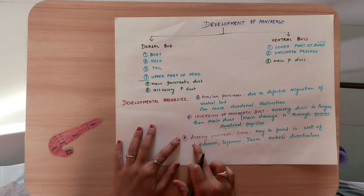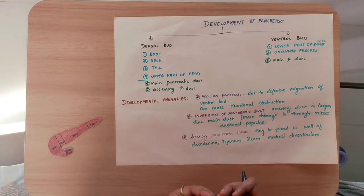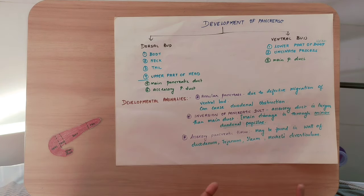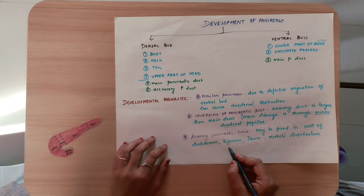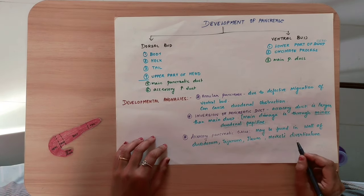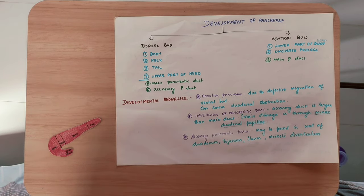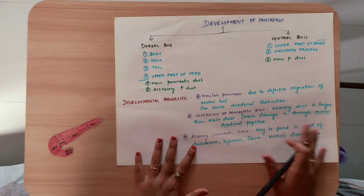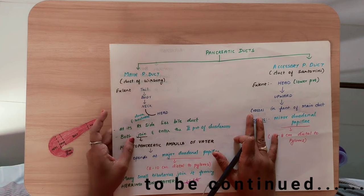The third condition is accessory pancreatic tissue — pancreatic tissue can develop in various other organs. It may be found in the wall of the duodenum, jejunum, ileum, or in Meckel's diverticulum. This is all about the development and the ducts of the pancreas.